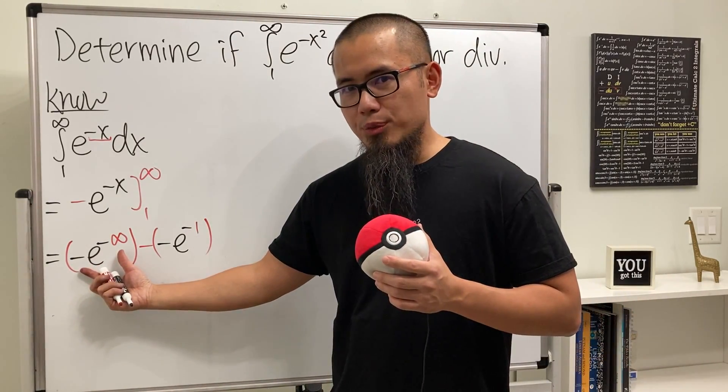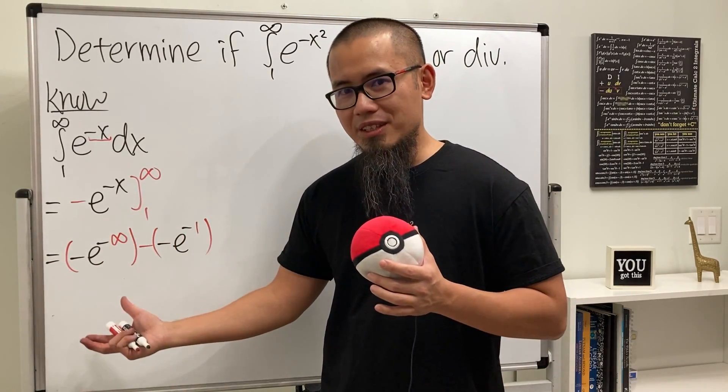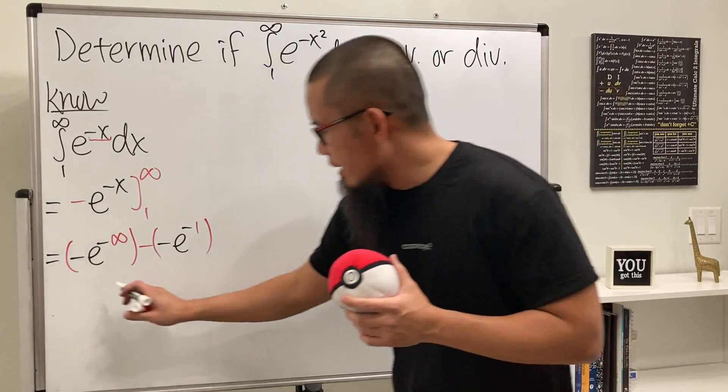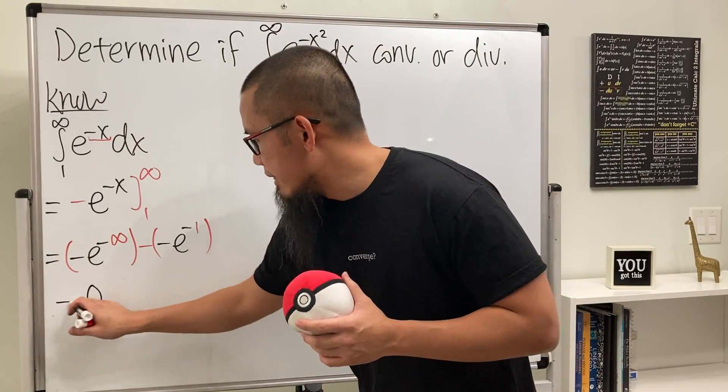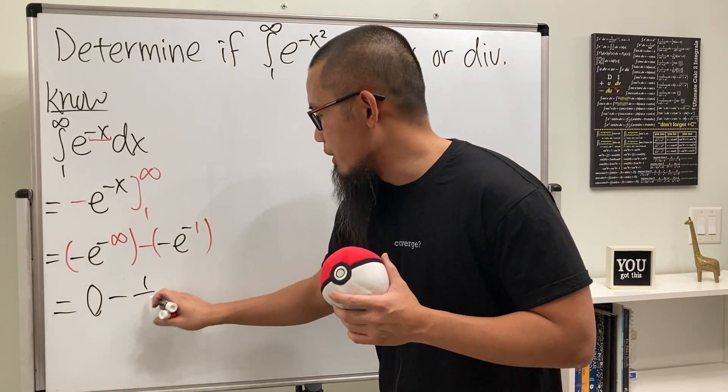Now, this right here, it's going to be 0. You can put this down to the bottom, e to the infinity is infinity, and then the whole thing would be approaching 0. So this is 0. And then this is just going to be e to the negative 1, which is just 1 over e. Negative, negative, so this is technically positive.